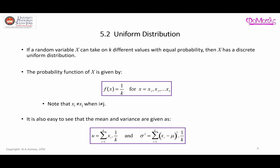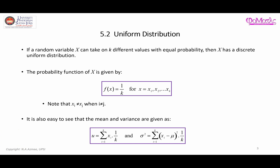Assalamualaikum warahmatullahi wabarakatuh. In this video I'm going to talk about the idea of uniform distribution, and this is related to a discrete distribution. Here we have a random variable x and it can take k different values, which means it has k different categories, and each value can happen with equal probability. Therefore this type of setting is known as x having a discrete uniform distribution.